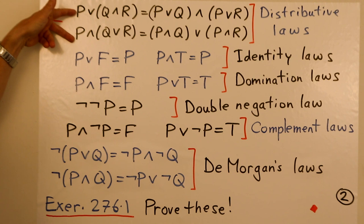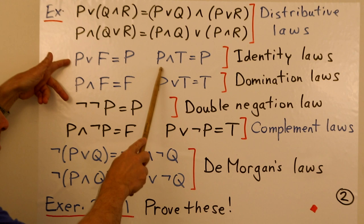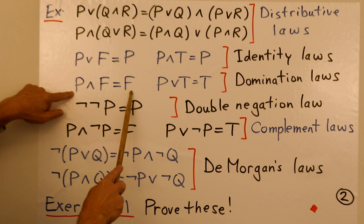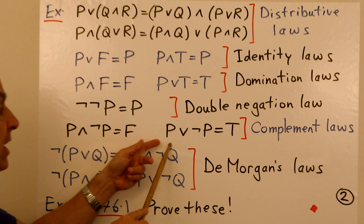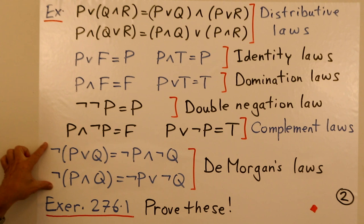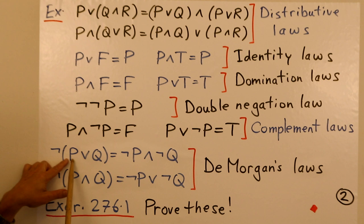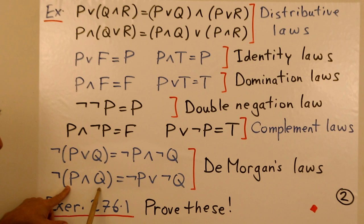The identity laws: p∧T equals p, p∧F equals F, p∨T equals T. These are the domination laws. The double negation law: ¬¬p equals p. Complement laws: p∧¬p is false, while p∨¬p is always true. De Morgan's laws: ¬(p∨q) is ¬p∧¬q, while ¬(p∧q) is ¬p∨¬q.